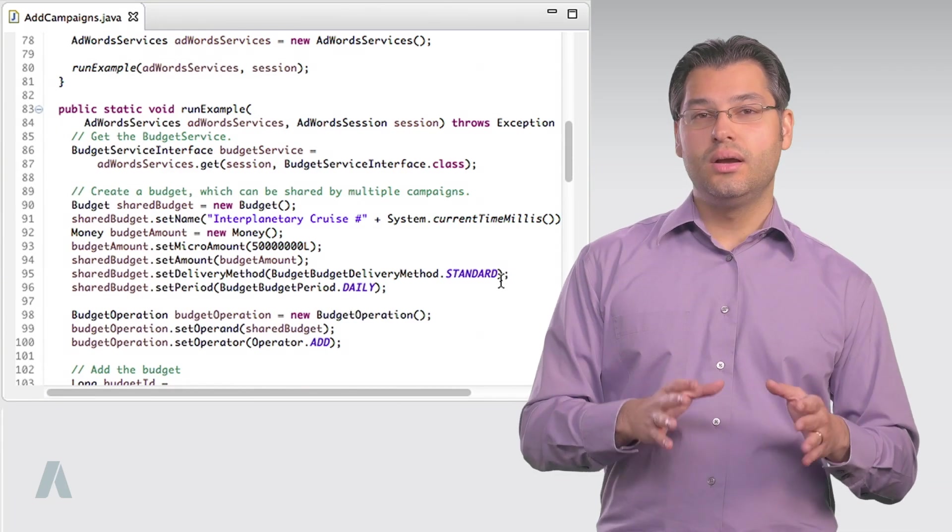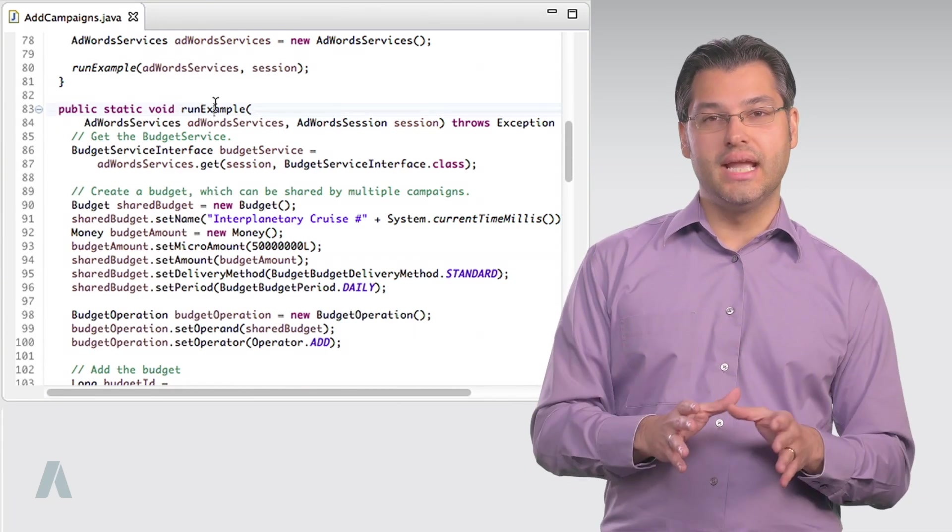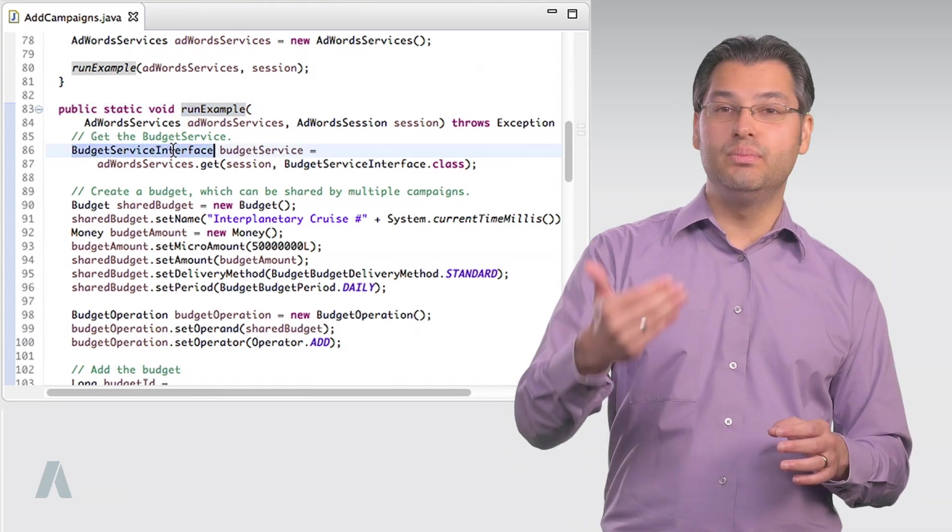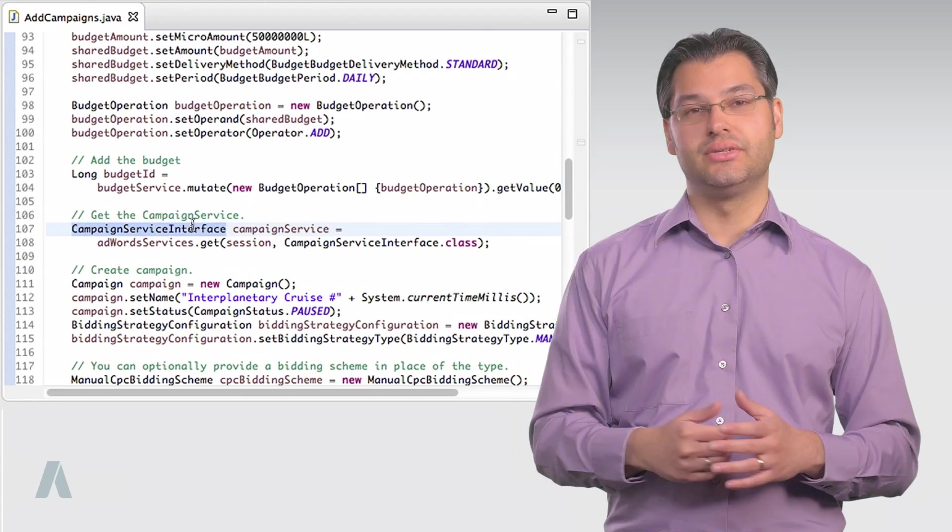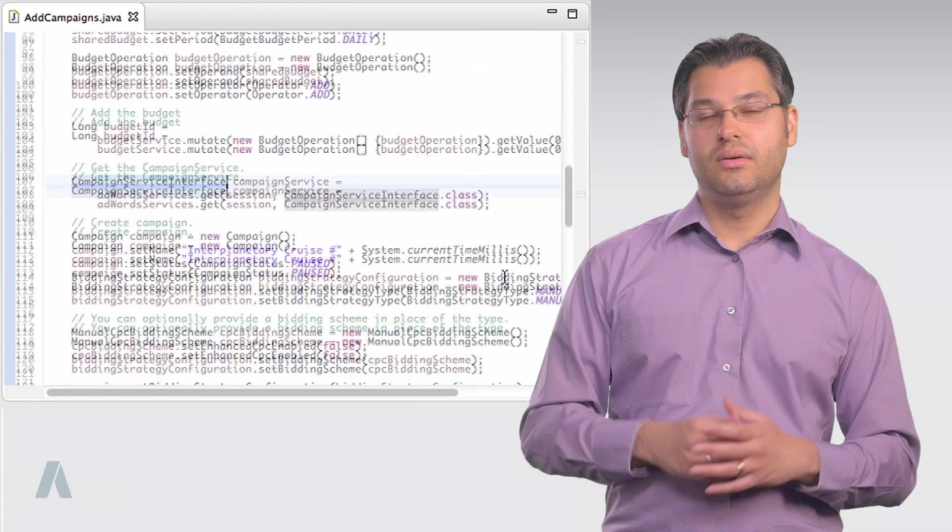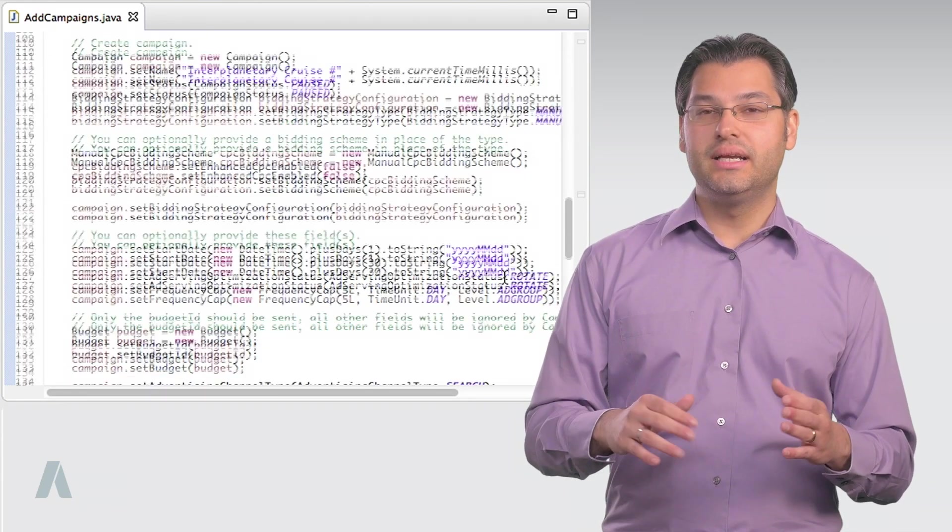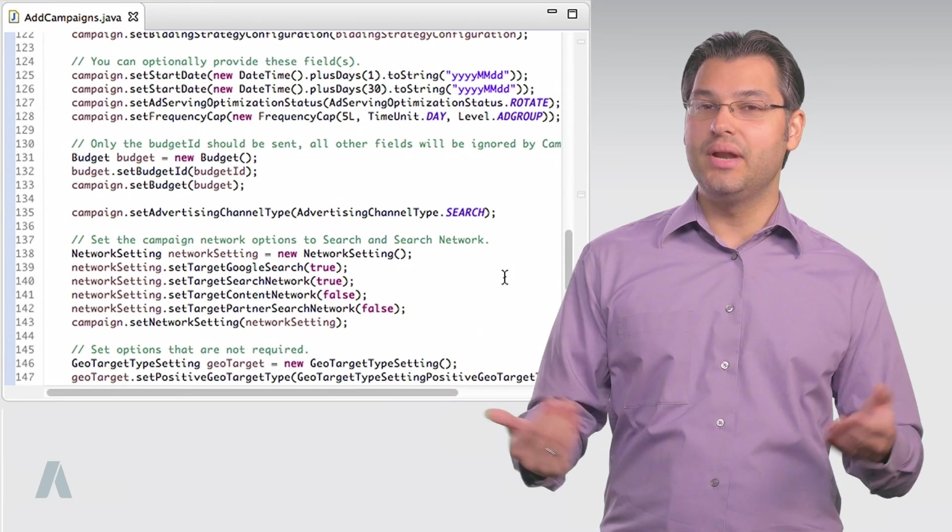In this case, once the object hierarchy is created, we use the add operator to add a new budget via the budget service and new campaigns via the campaign service. We don't need to set the IDs here because these are new entities and don't have IDs yet.